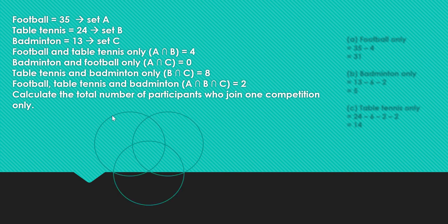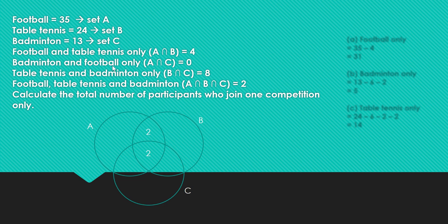We are going to draw 3 sets and label them A, B, and C. We label the value in the middle — the triple intersection — first. Then we continue with the pairwise intersections. For football and table tennis, A intersect B, there are 4. So 4 minus 2 gives us 2 in that region. For badminton and football only, A intersect C, there is none, so we don't label anything there.